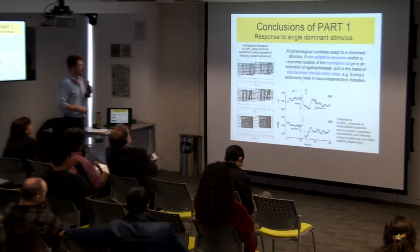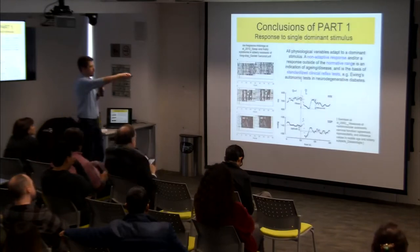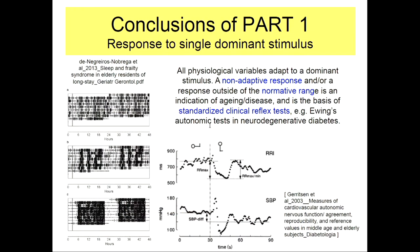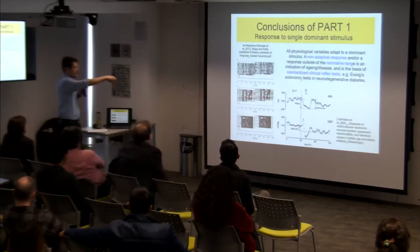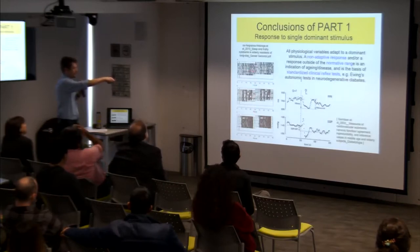The conclusion of this first part on a single dominant stimulus is that the body should respond to the stimulus — it is easier to adapt to a single dominant stimulus than to resist. What happens with aging or disease? Here you see an elderly healthy adult who is very active during the day and not active during the night. With frailty, when a person gets ill, this day-night rhythm is slowly lost — the adaptability to the single dominant stimulus disappears.